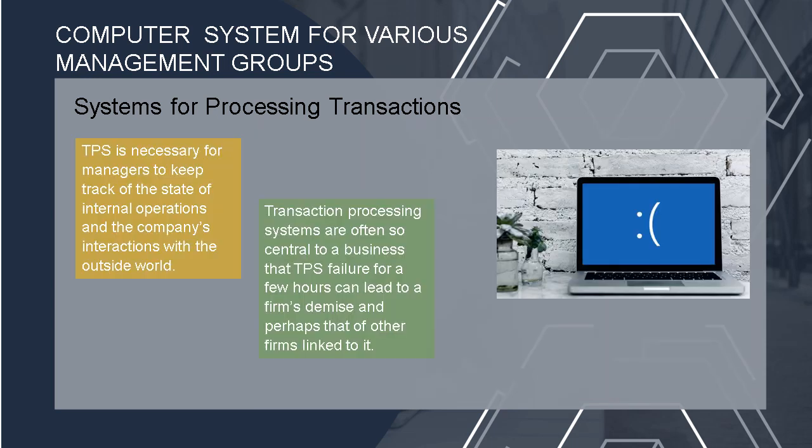To summarize: the TPS is necessary for managers to keep track of the state of internal operations and the company's interaction with the outside world. Transaction processing systems are so central to a business that TPS failure for even a few hours can lead to a firm's demise and perhaps that of other firms linked to it.